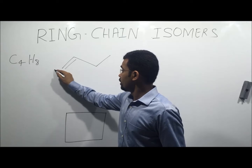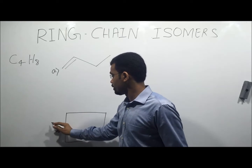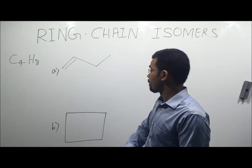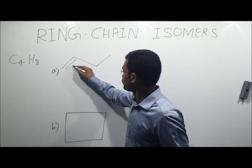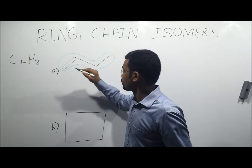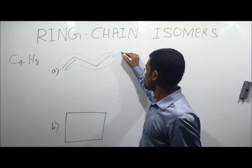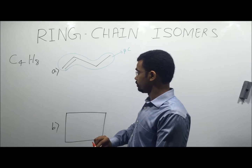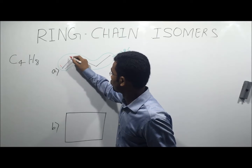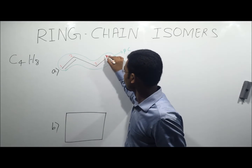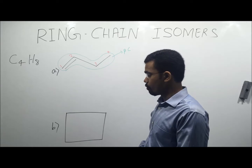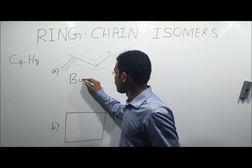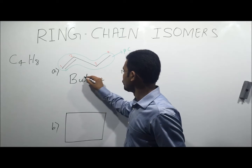Let us consider compound A. Here the parent chain is an open chain. This is the parent chain. After numbering, the name of compound A is 1-butene.